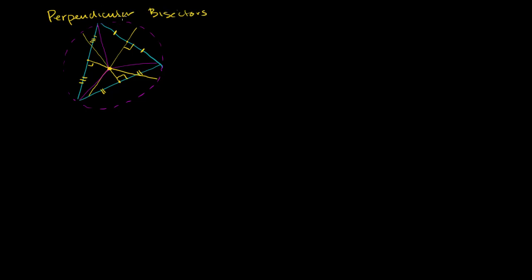That one unique point is equidistant from the vertices of this triangle, so this distance is going to be equal to this distance, which is going to be equal to that distance. Because it's equidistant to the vertices, you could draw a circle of that radius that goes through the vertices. That's why we call this point — the intersection of the perpendicular bisectors — our circumcenter, because it is the center of our circumcircle, a circle that can be circumscribed about this triangle. The radius of the circumcircle, the distance between the circumcenter and the vertices, is the circumradius.